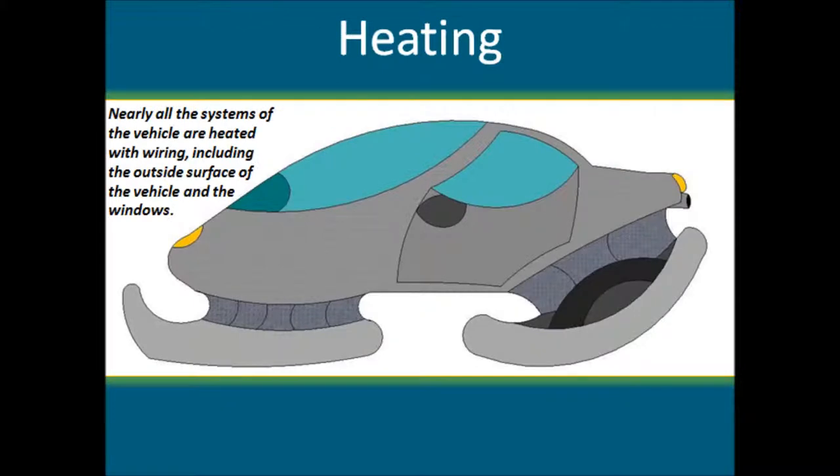Heating of the vehicle is delivered by a complex network of wires that are positioned throughout the whole vehicle. This system is powered by the main rechargeable batteries throughout the vehicle. Nearly all systems of the vehicle are heated with wiring, including the outside surface of the vehicle and the windows. The only sections of the vehicle that are not heated are the parts of the vehicle that touch the ice or snow terrain. This ensures the vehicle doesn't melt the terrain it travels on.